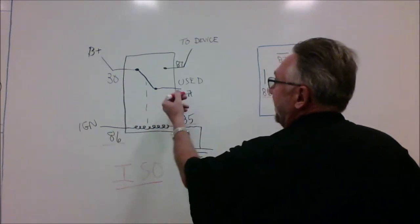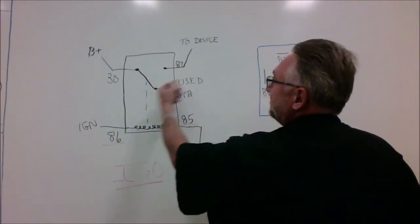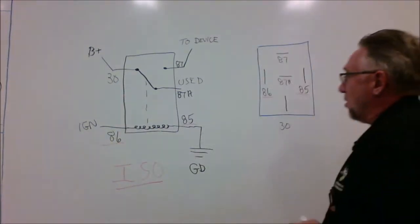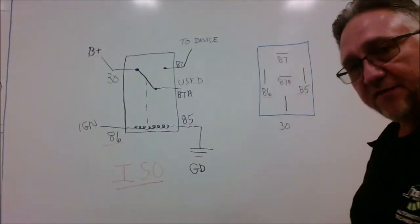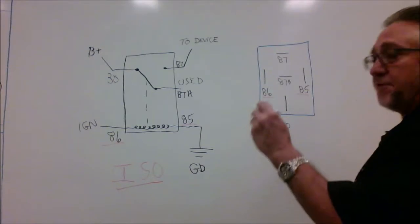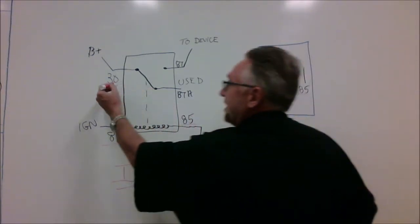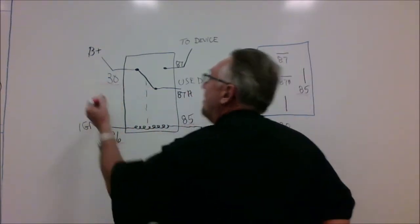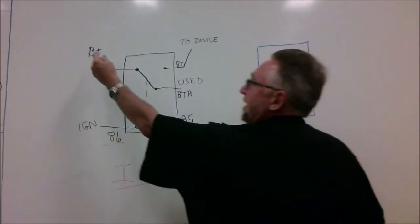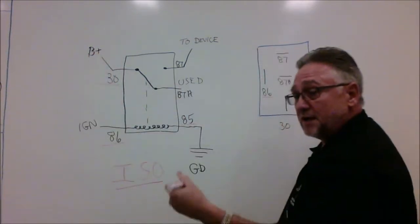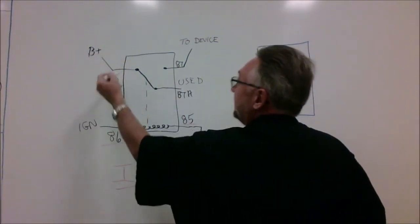30 is always going to have, is always going to be battery power. So you're always going to have source voltage on pin 30. And it comes over, and as you can see, this is the actual switch.